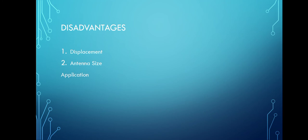Disadvantages: first, displacement — the antenna can be subject to displacement and adjustment issues that must be checked. Second, antenna size — outdoor management can be difficult when the antenna size increases. Applications: it is mainly used as a feeder element in the Yagi-Uda antenna, parabolic antenna, broadside antenna, log-periodic antenna, phased and reflector arrays, and is generally used in radio and TV receivers.